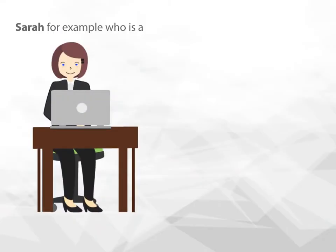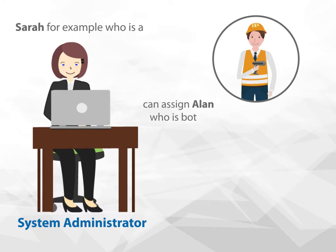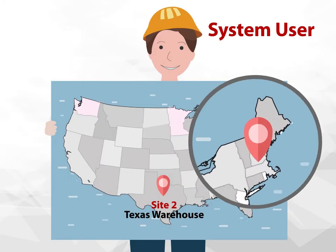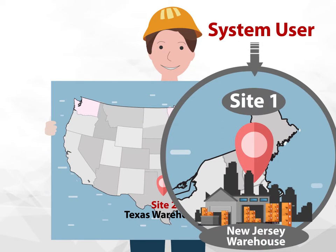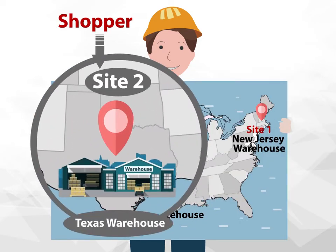Sarah, for example, who is a system administrator, can assign Alan — who is both a system user and a shopper — system user access to site one and shopper access to site two.